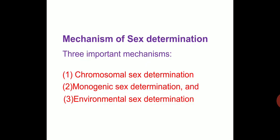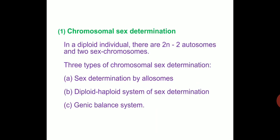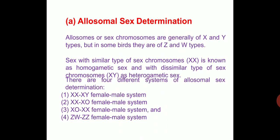There are three important mechanisms by which sex can be determined in an organism: first is chromosomal sex determination, second is monogenic sex determination, and third is environmental sex determination. Under chromosomal sex determination, in a diploid individual there are 2n minus two autosomes and two sex chromosomes. The subtypes include allosomal sex determination, haplodiploid system, and genic balance system.